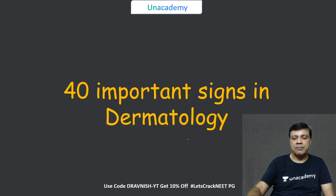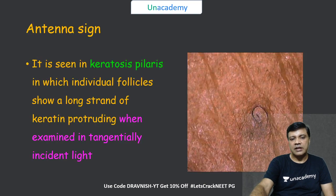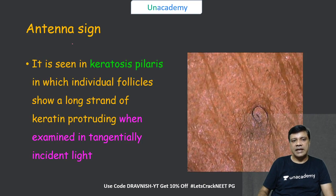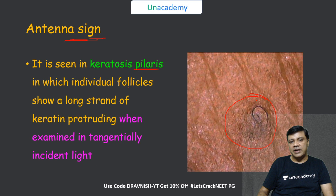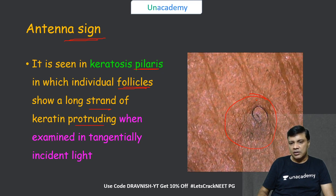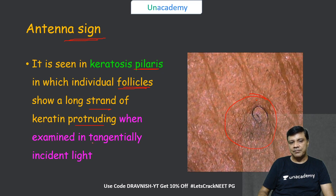Let us start with 40 important signs of dermatology. The first sign is the antenna sign, seen in patients with keratosis pilaris, in which the individual hair follicle along with the hair shaft will have a long strand of keratin protruding through it. It is best seen when light is directly tangential over the lesions.